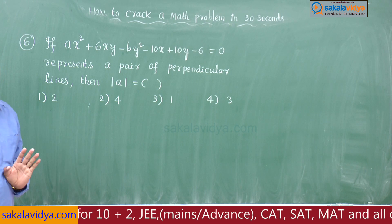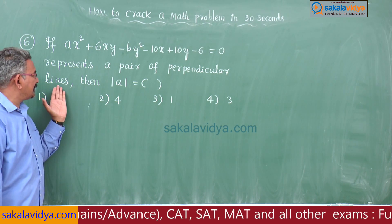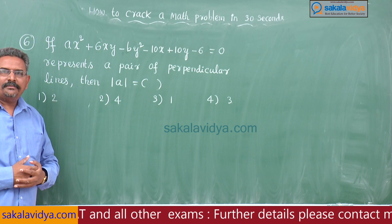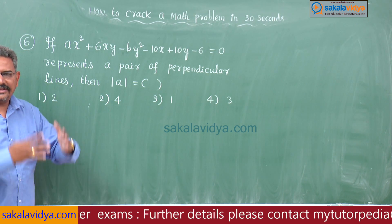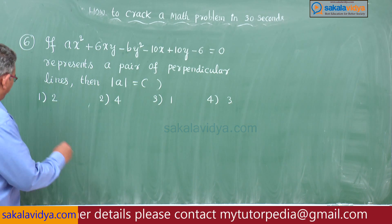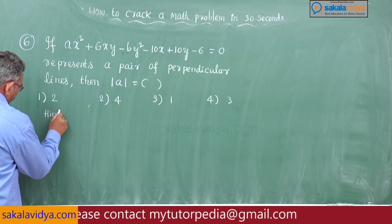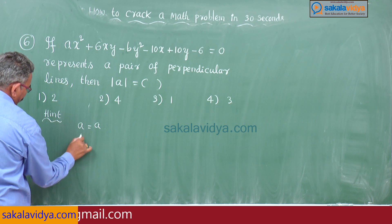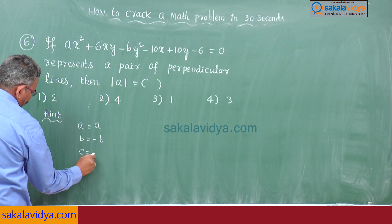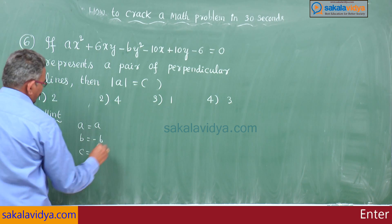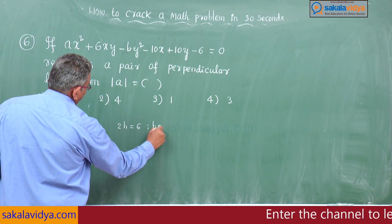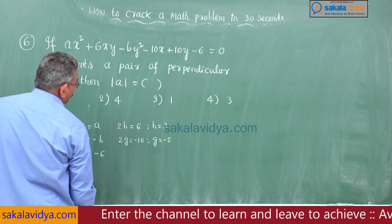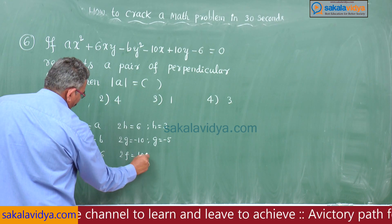Next, it must also represent a pair of lines using abc + 2fgh - af² - bg² - ch² = 0. We can apply the shortcut. The values are: a = A, b = -B (which equals A), c = -6. Also, 2h = 6 so h = 3; 2g = -10 so g = -5; 2f = 10 so f = 5.